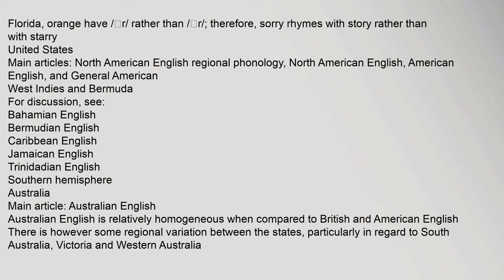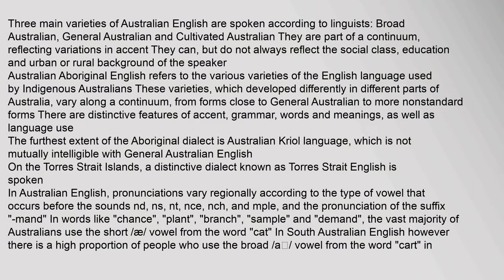Australian English is relatively homogeneous when compared to British and American English. There is however some regional variation between the states, particularly in regard to South Australia, Victoria, and Western Australia. Three main varieties of Australian English are spoken: Broad Australian, General Australian, and Cultivated Australian. They are part of a continuum reflecting variations in accent, and can but do not always reflect the social class, education, and urban or rural background of the speaker. Australian Aboriginal English refers to the various varieties of the English language used by Indigenous Australians.